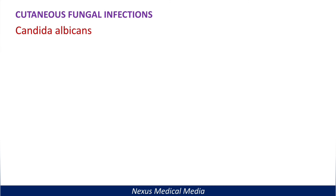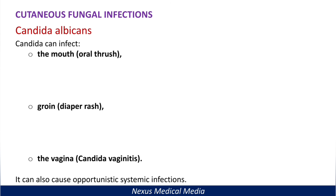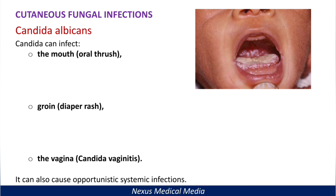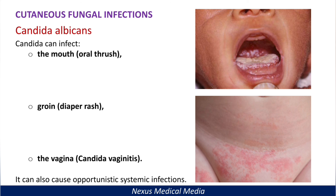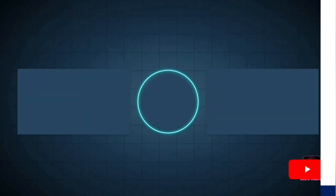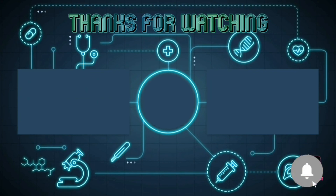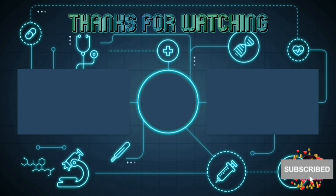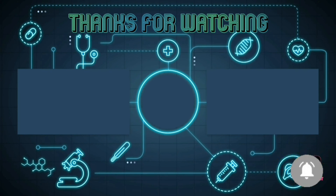Candida species can also cause cutaneous infections. Candida albicans can cause oral thrush, diaper rash, and candida vaginitis, and sometimes opportunistic systemic infections. There is a separate video on candida in the mycology playlist. Here we can see the appearance of oral thrush and diaper rash. Thank you for watching — if you find these videos interesting and beneficial, please share them with your colleagues and subscribe.